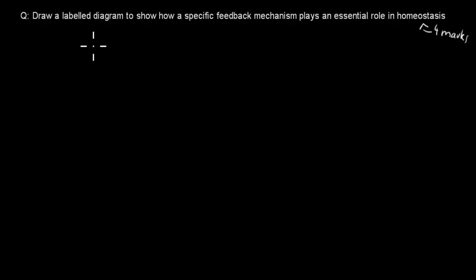Alright, so for the first one, it says draw a labeled diagram to show how a specific feedback mechanism plays an essential role in homeostasis. And that's worth 4 marks. So pause the video, attempt the question, and when you're ready, press play and I'll go over the answer step by step.